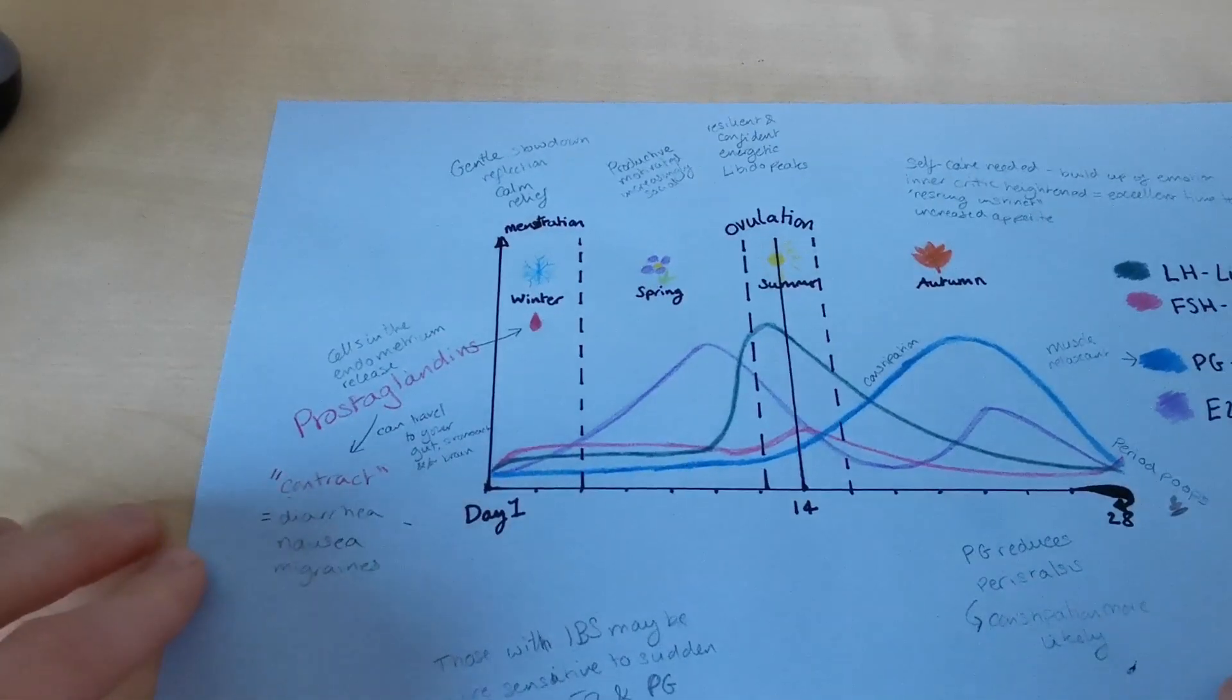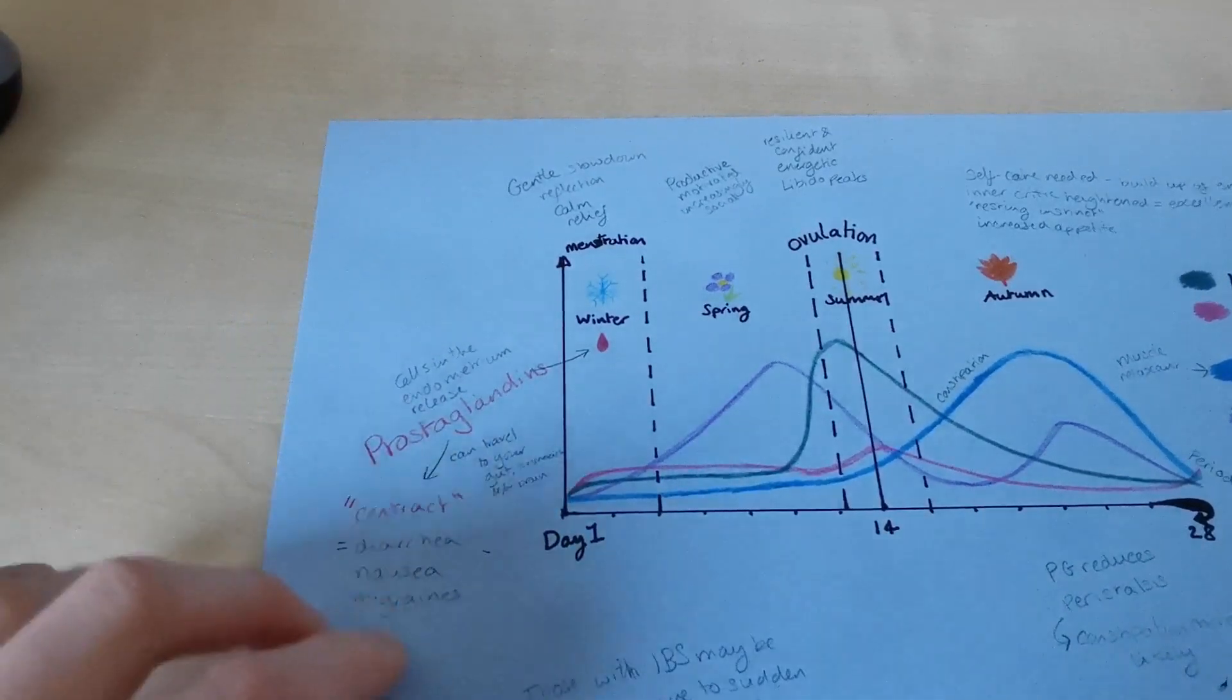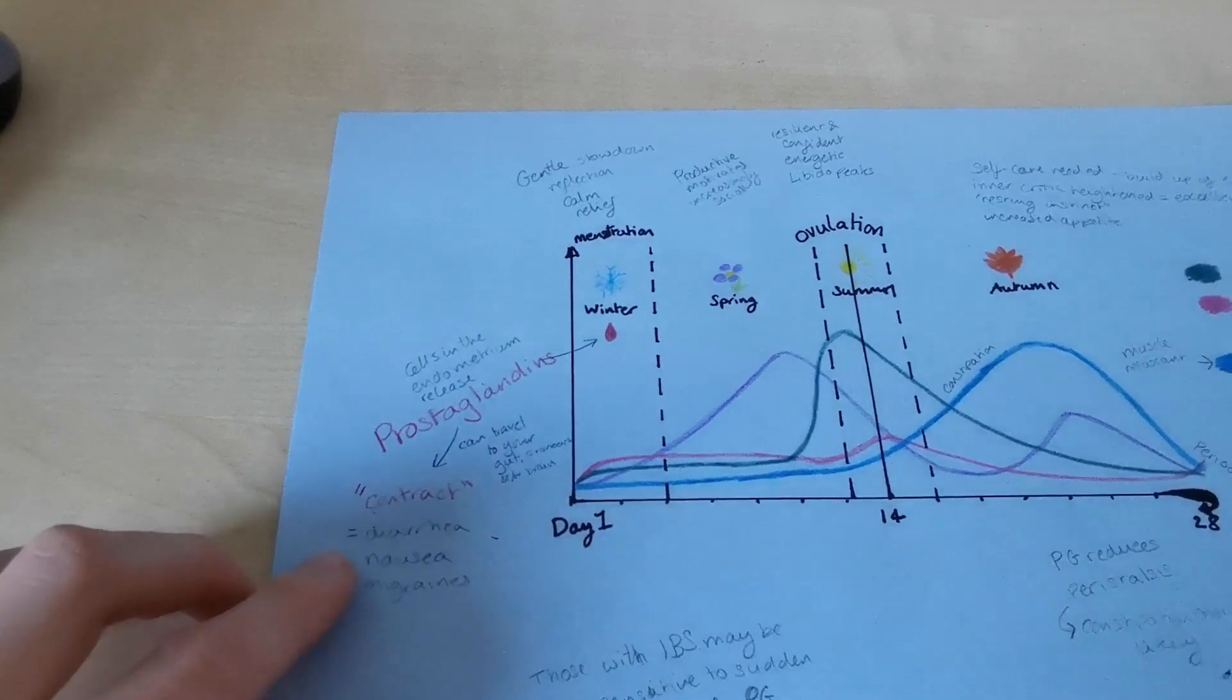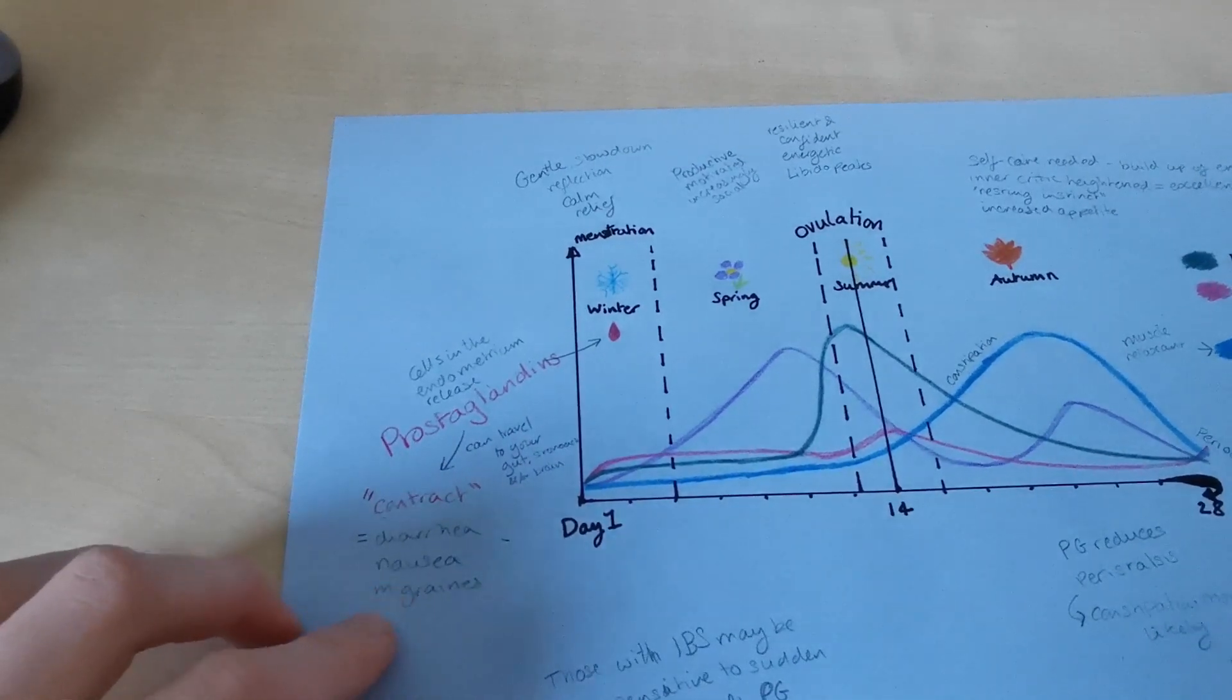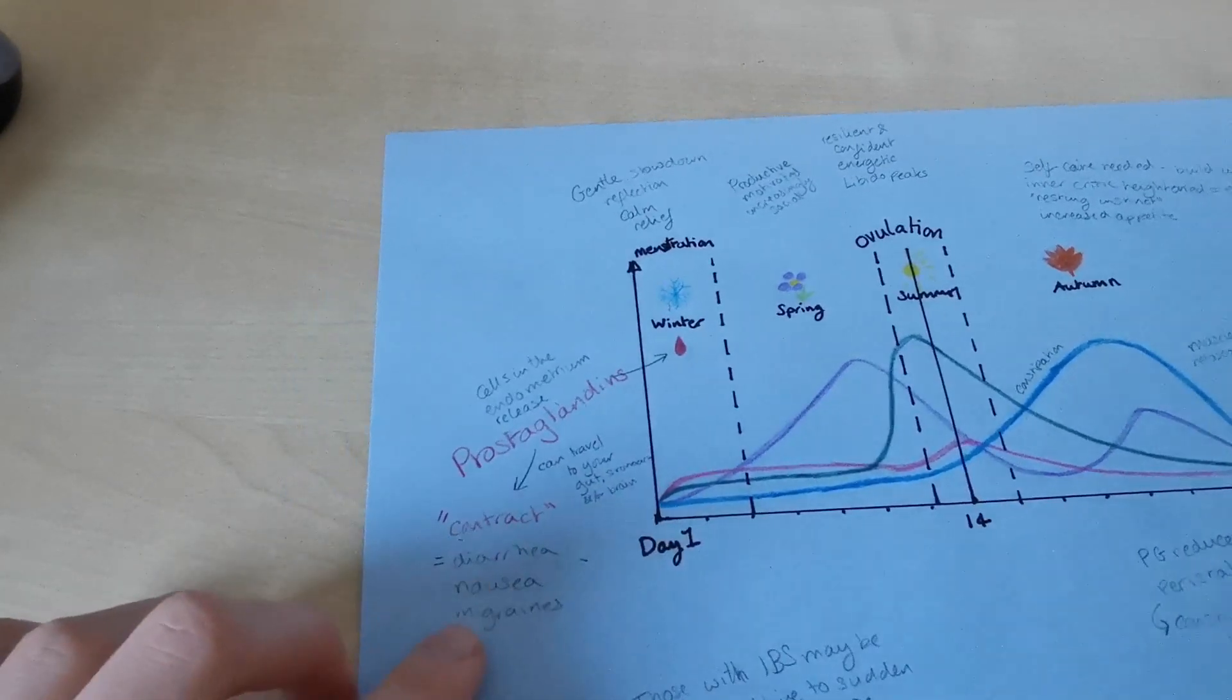So, kind of the opposite of reducing the peristalsis. If you're shouting contract, it's squeezing things out maybe too quickly. And your stomach can make you feel nauseous and it can even cause migraines.